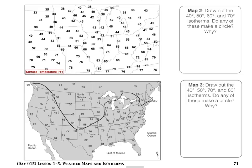I'm going to draw the 40-degree isotherm first. I'll start by finding the 40s — here is a 40-degree mark, and I see another one here. There are some others scattered throughout, like this one and another one up here. All of these points have to be on that line. In between numbers, I need to check: for example, between 36 and 42 there should be a 40 right about here. Between 38 and 42, I ask myself — is there a 40? Yes.